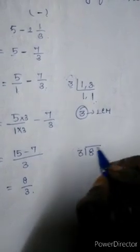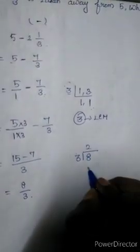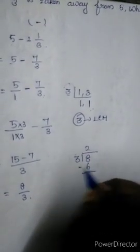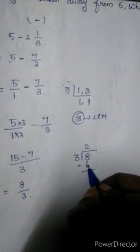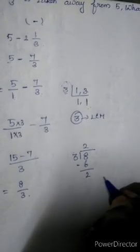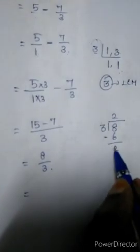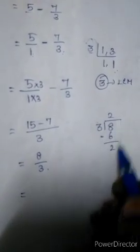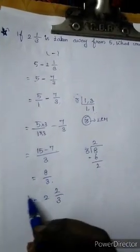3 times 2 is 6. Subtract. 8 minus 6 equals 2. So we have to write 2 2 by 3. Quotient should be here. And then 2 2 by 3. This is the answer.